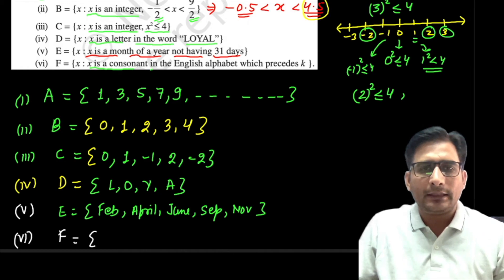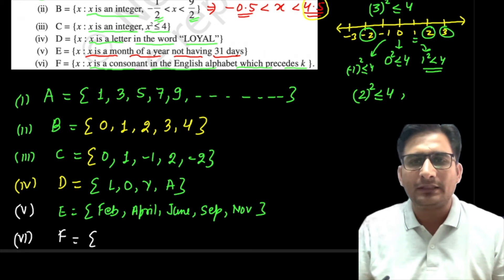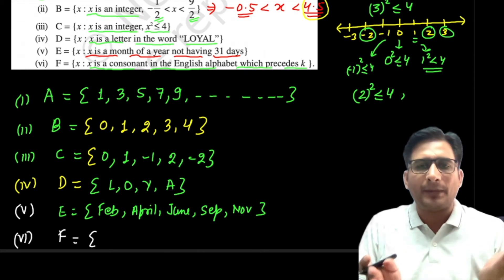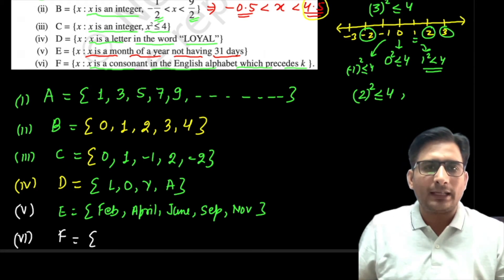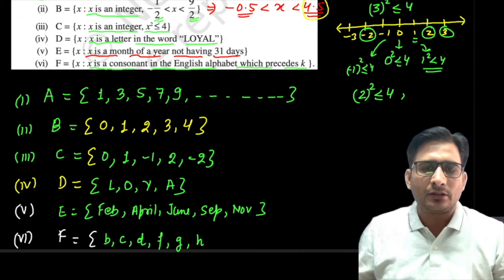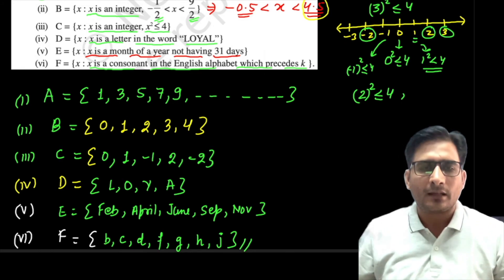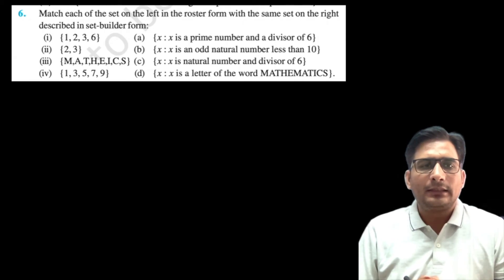Part six (f): x is a consonant in the English alphabet which precedes K. The alphabet goes: A, B, C, D, E, F, G, H, I, J, K — so we need consonants before K. Vowels A, E, I are excluded. The consonants before K are: B, C, D, F, G, H, J. So the roster form is {B, C, D, F, G, H, J}.